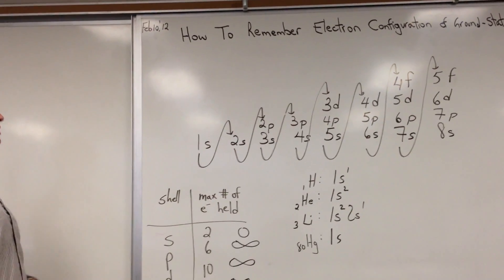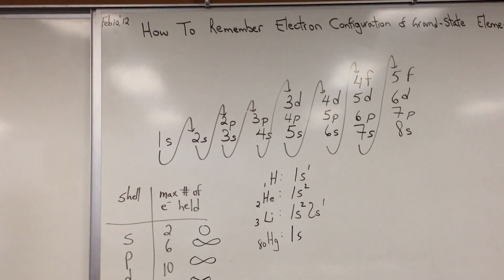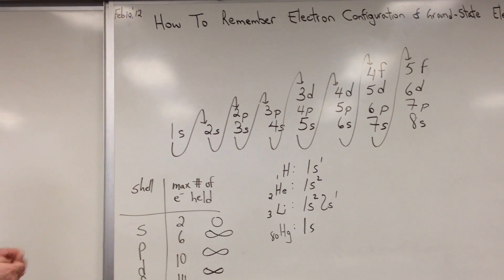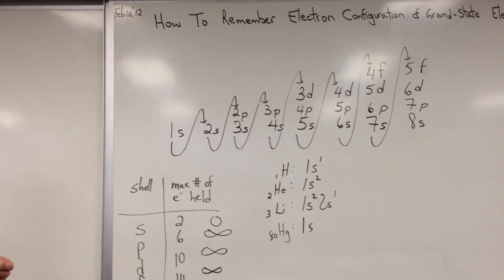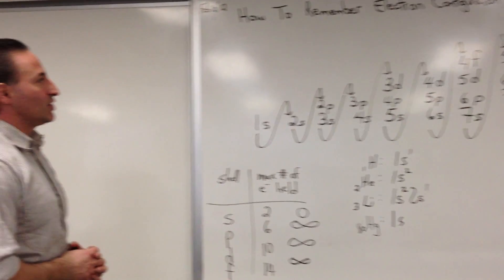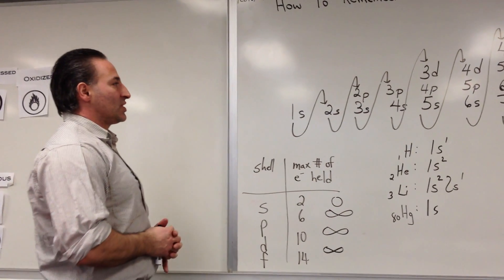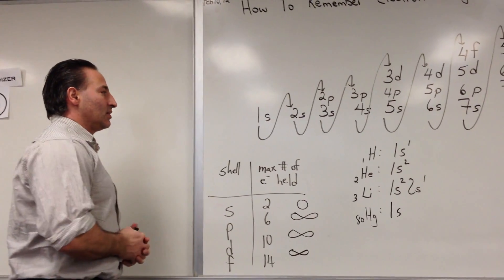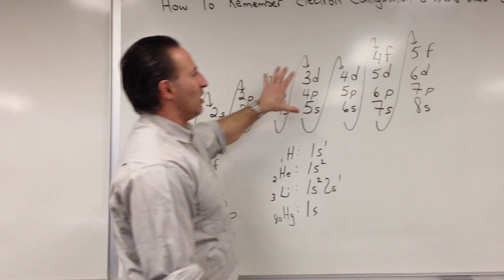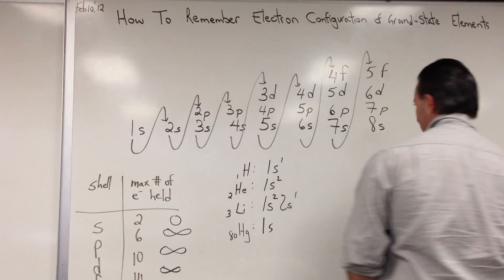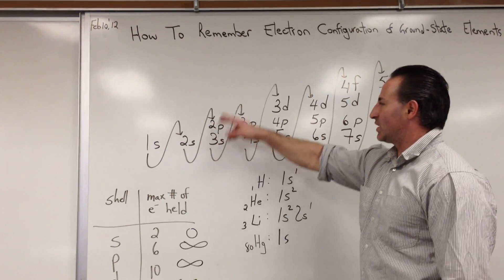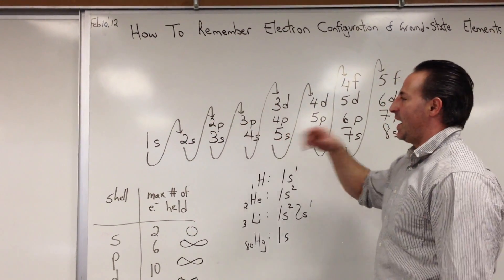In this class, we're going to learn how to remember the electron configuration, or how to draw or write the electron configuration of ground state elements. To assist us in doing this, we have a shell filling mnemonic — a memory aid. This is the order of the filling of the electron shells in an atom.